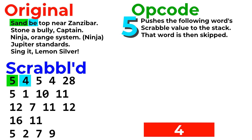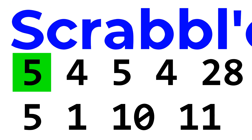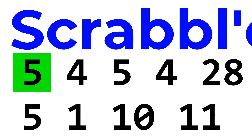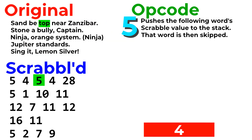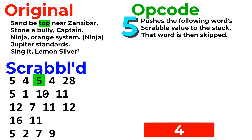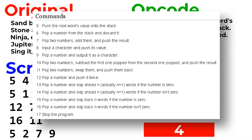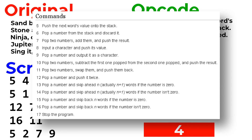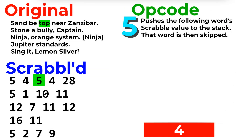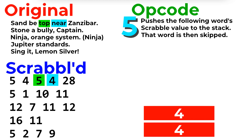After a number's value is pushed, it is skipped, so any instruction that would come with that word does not happen. And yes, I know that 4 points does not actually have an instruction — I'm just saying that if it did, it would be skipped here. The next two words push another 4 to the stack.